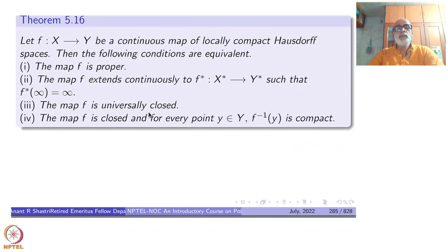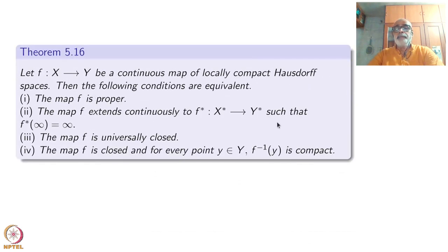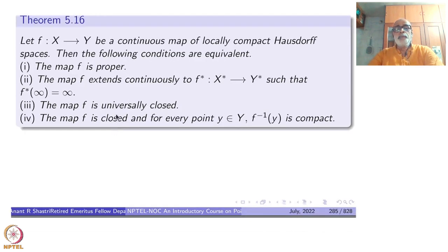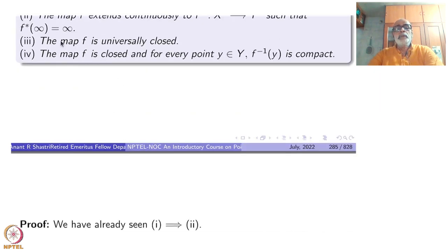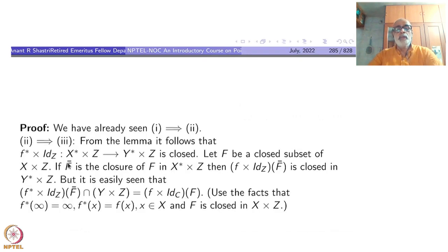One implies two we have already seen — that was our motivation to introduce the concept. Properness was introduced precisely this way: f extends continuously by taking infinity to infinity. So we will prove that two implies three.